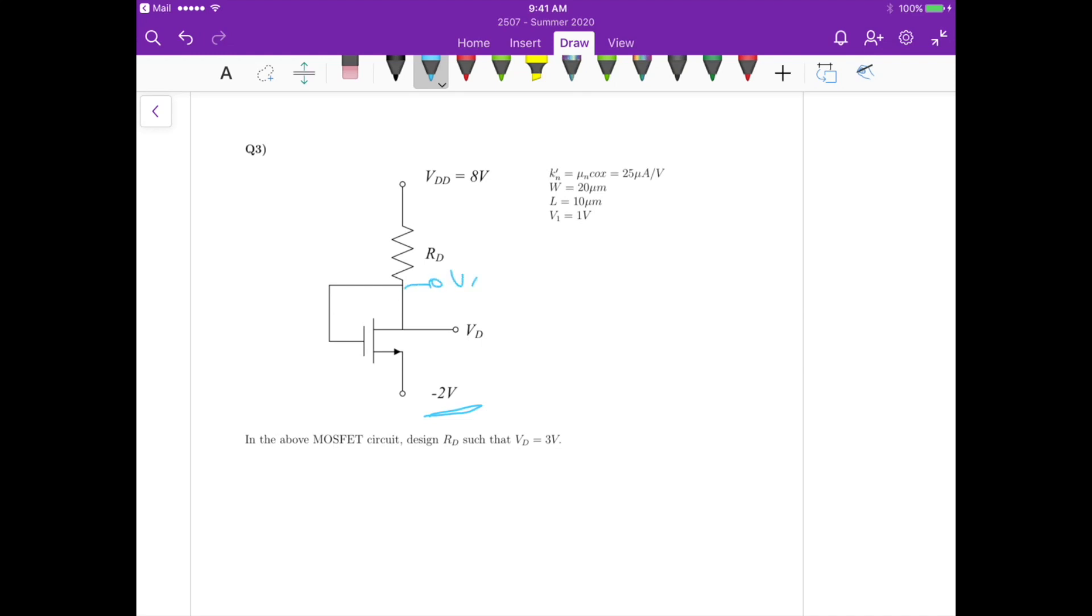So this is also VG, right. VD and VG they're going to be the same, then we have a VDD of 8 volts and we have to determine, so the question here is to design Rd such that VD is equals to 3 volts, so indeed we also know the value of VD that's 3 volts.